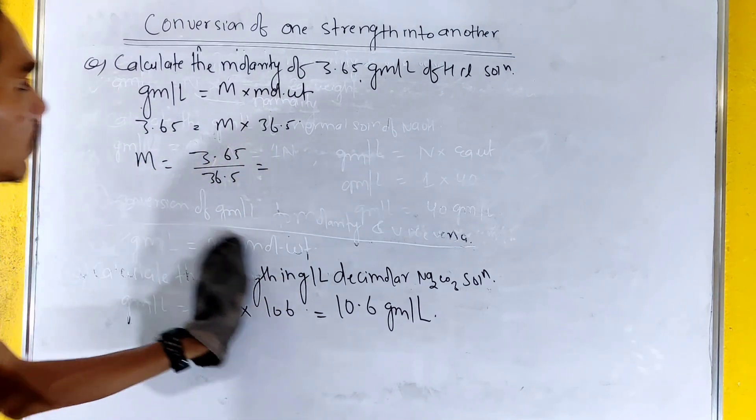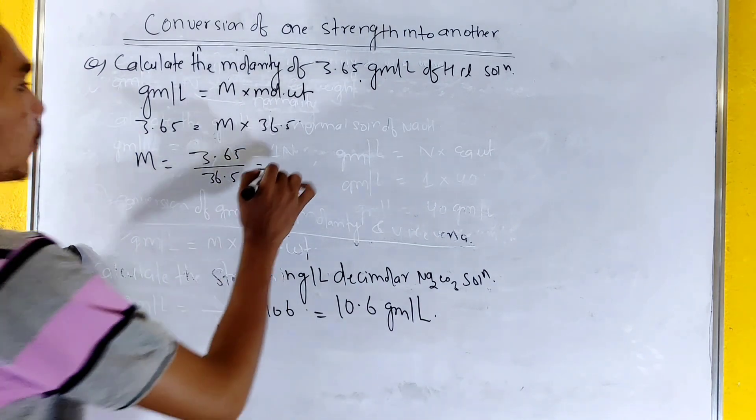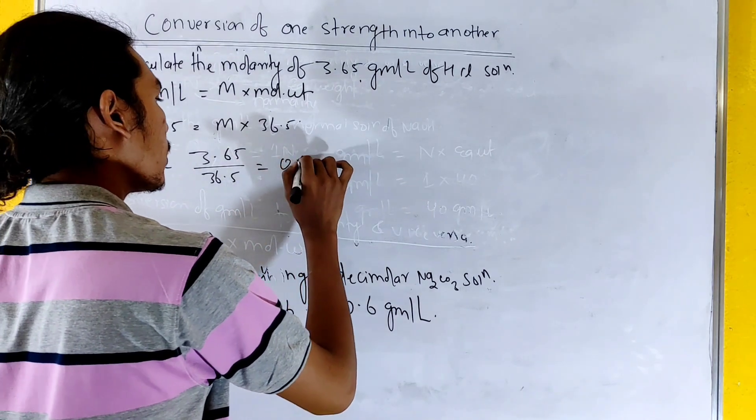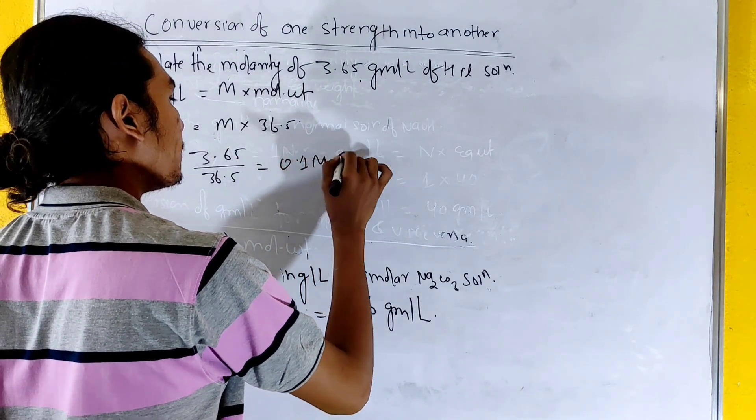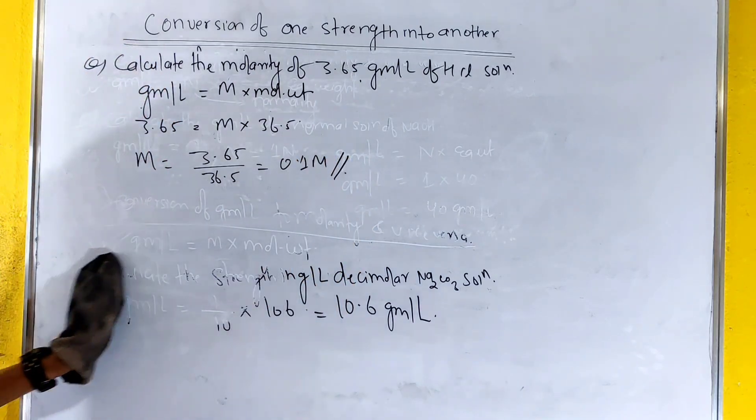We get the value of M. M equals 3.65 divided by 36.5, which is 0.1 M.